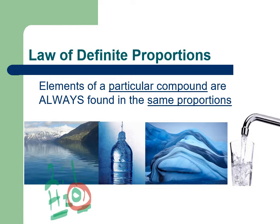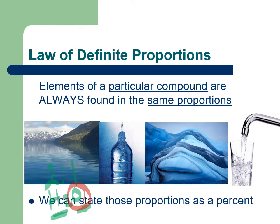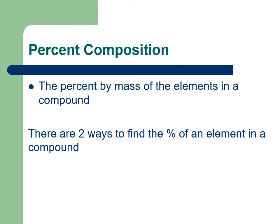Percent composition is by mass, not by number. The formula is the number, but once we get a percent composition by mass figured out, we can use that to actually find the formula. We can state those proportions as a percent, and the percent by mass of an element in a compound we refer to as the percent composition.